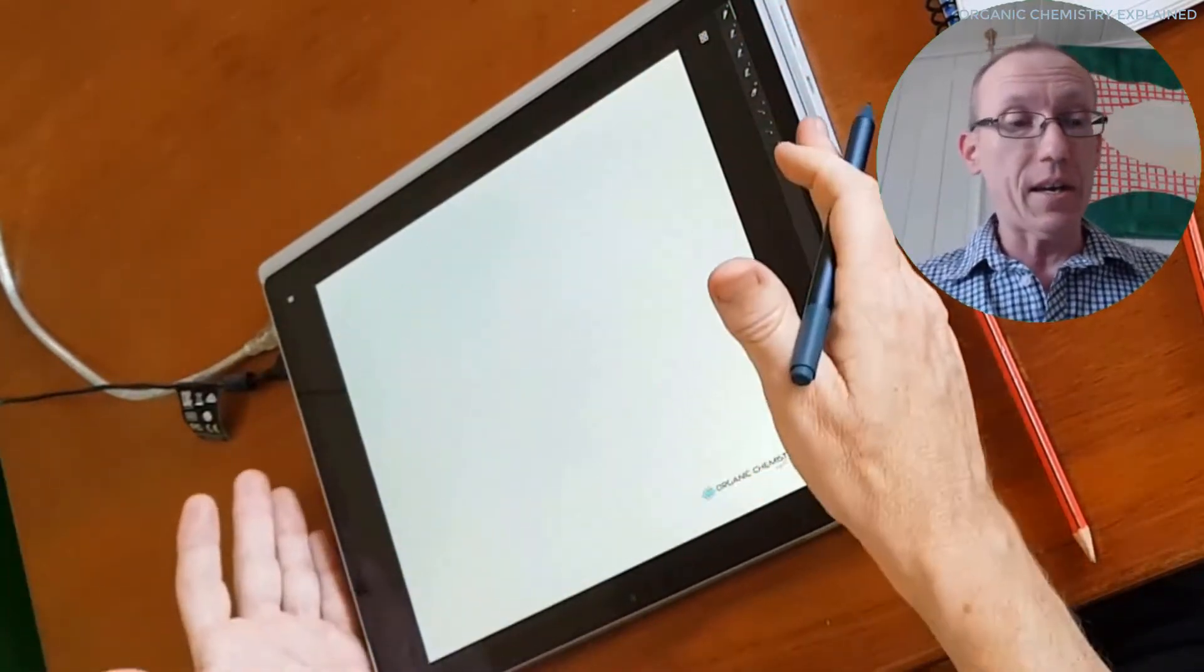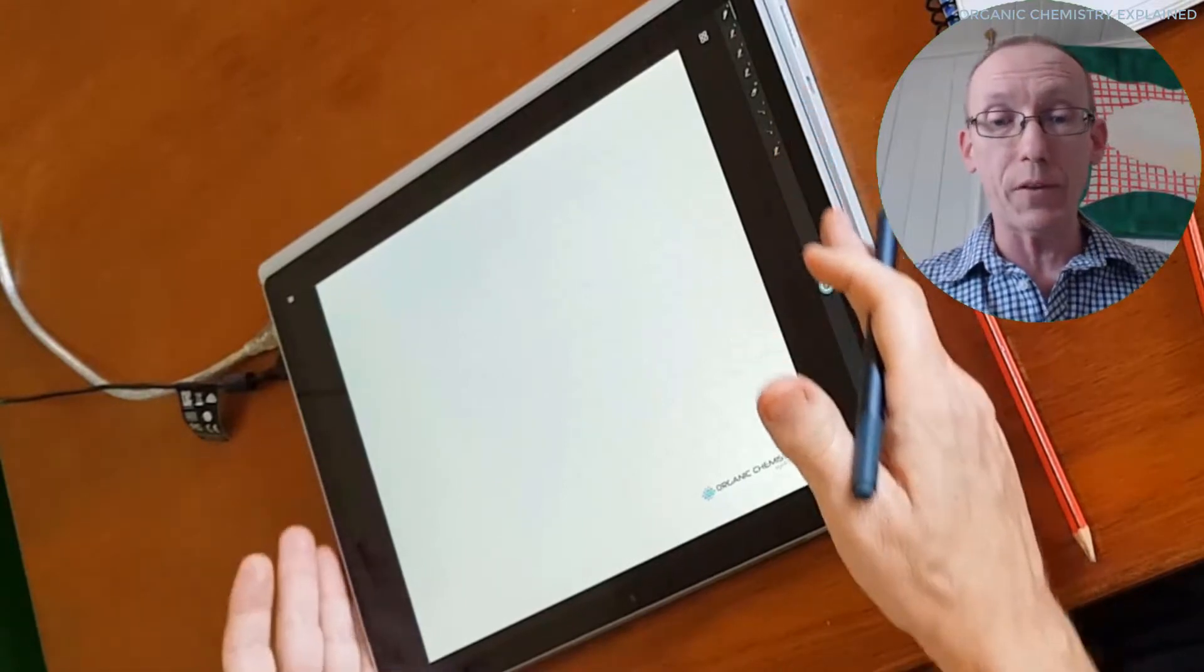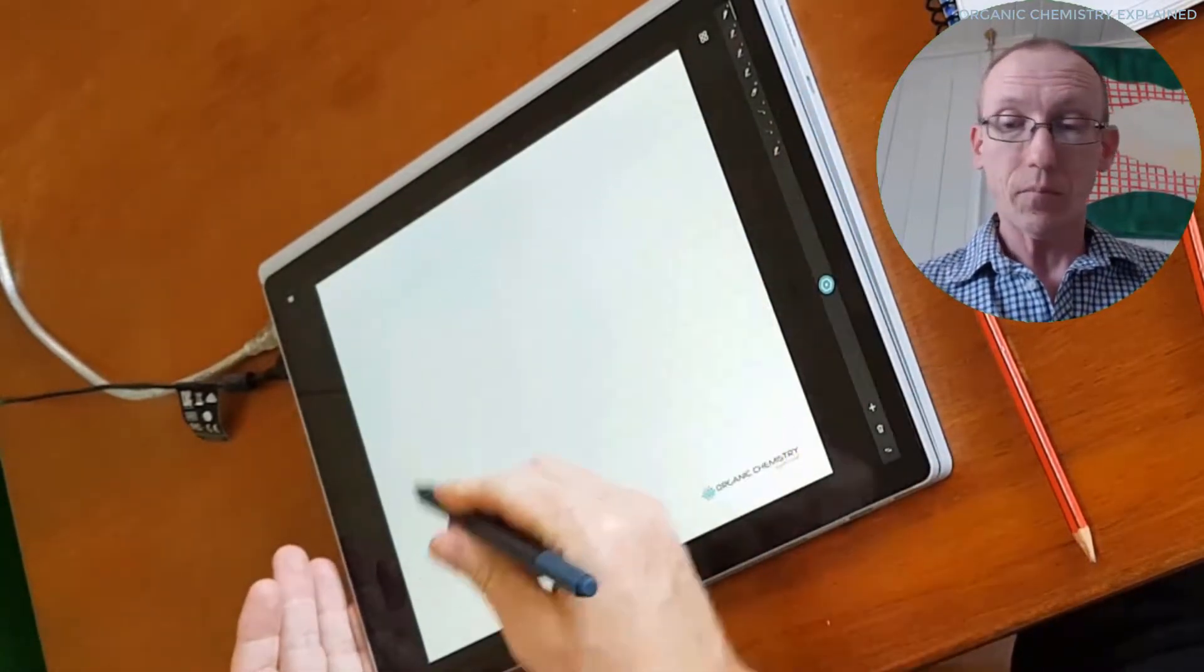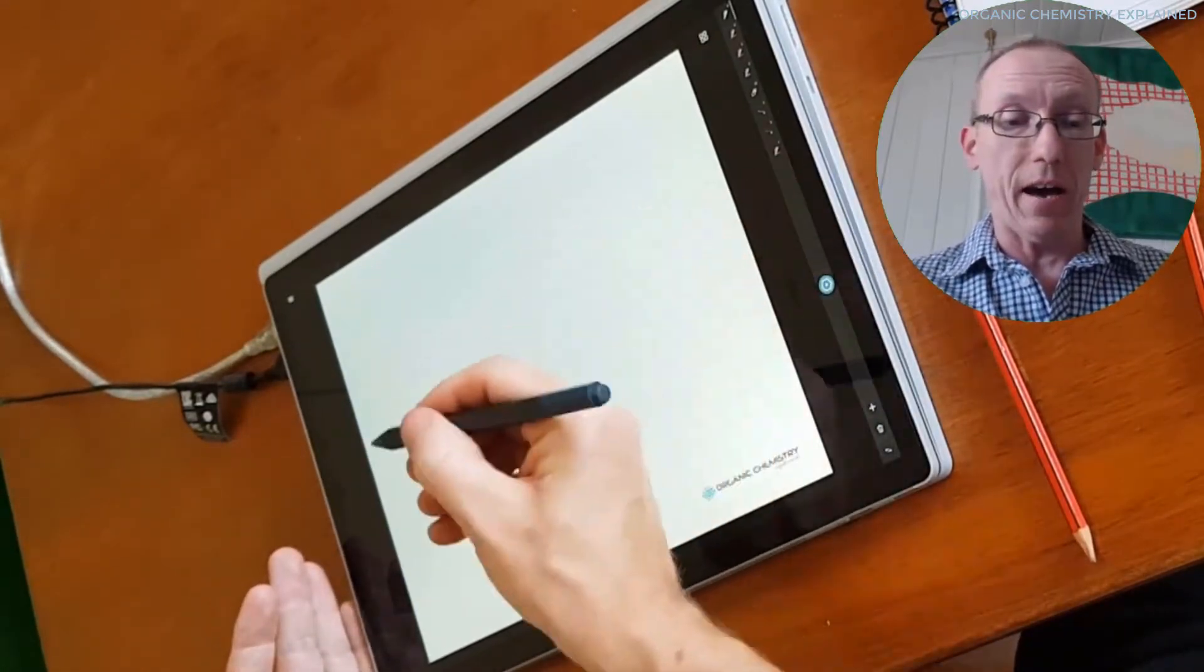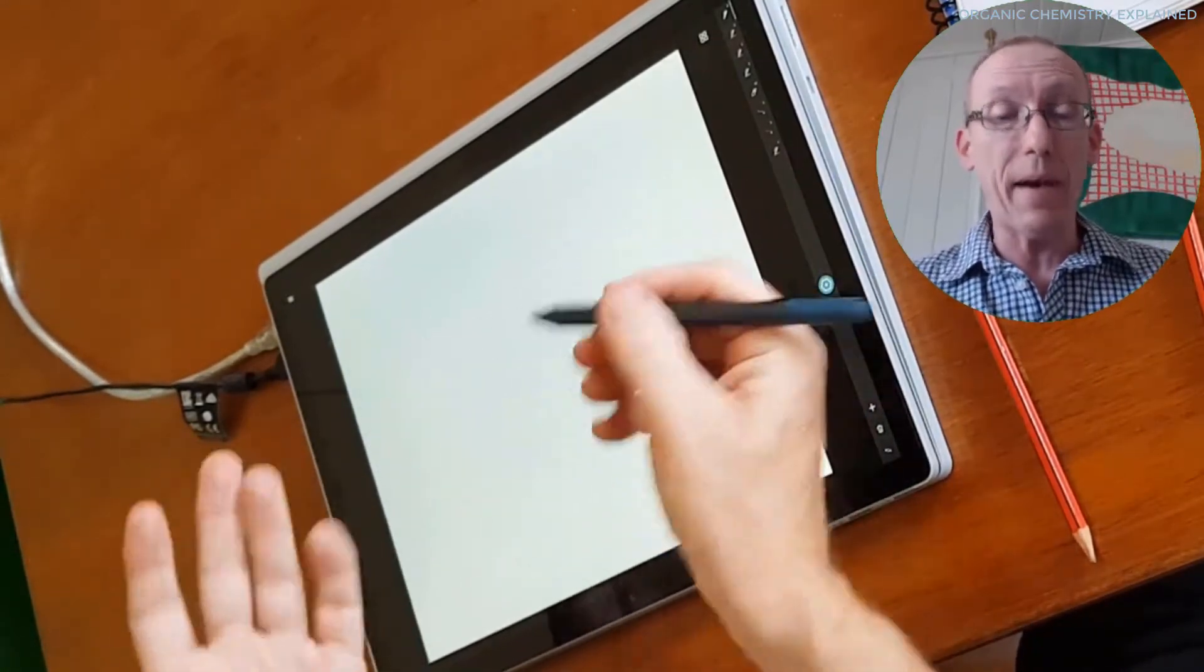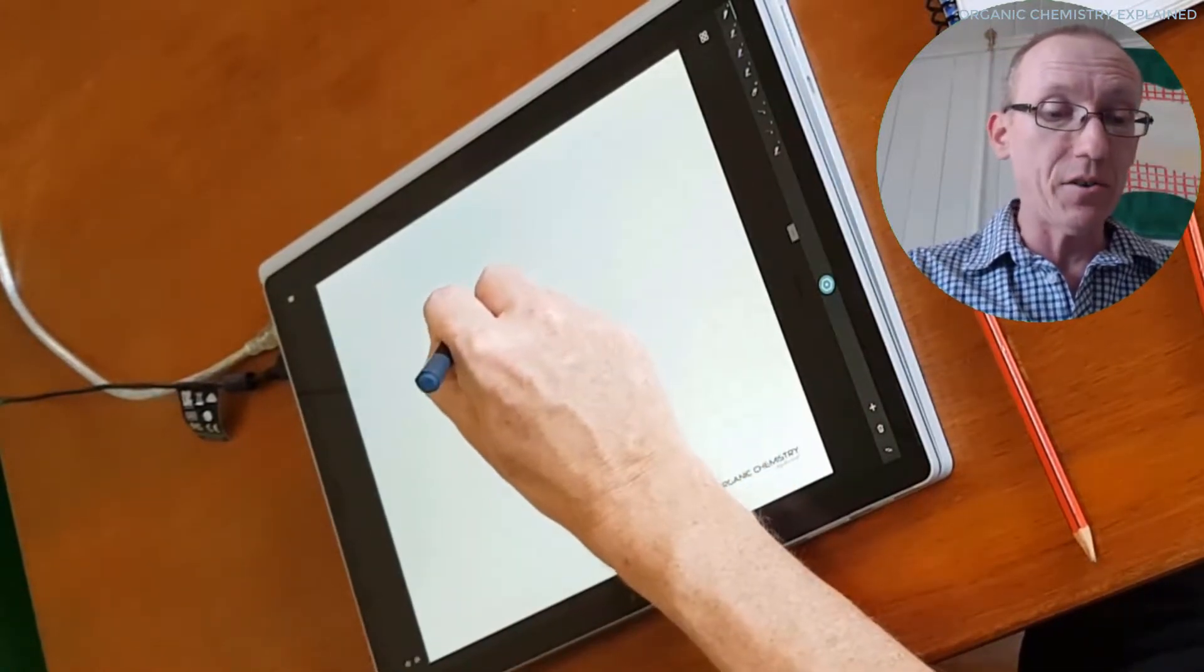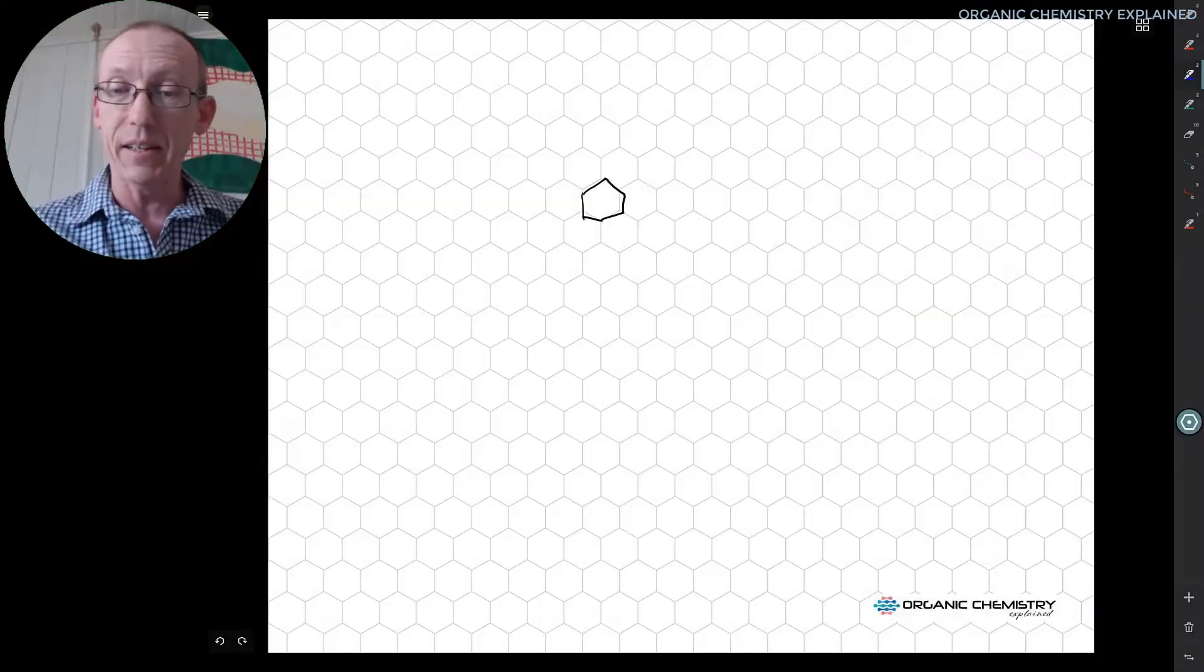However, I use a Microsoft Surface book. So this is a Surface book with a stylus. And so this is very similar to what you could do the Apple iPad plus an Apple pencil. And you can just annotate directly onto the template like this.